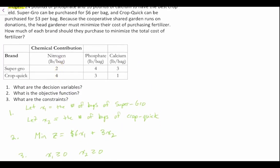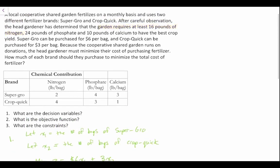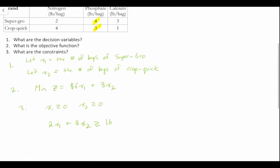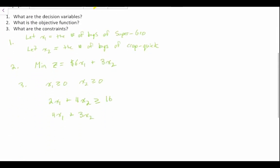Our next constraint is that the garden must have at least 24 pounds of phosphate. Super Grow gives 4 pounds per bag and Crop Quick gives 3 pounds of phosphate per bag. So we write: 4X1 plus 3X2 must be greater than or equal to 24.